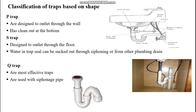Classification of traps based on shape: P-trap is designed to outlet through the wall and has a clean out at the bottom. S-trap is designed to outlet through the floor; the water in the trap seal can be sucked out through siphoning or from other plumbing drains. Q-trap is the most effective trap and is used with a siphonage pipe.